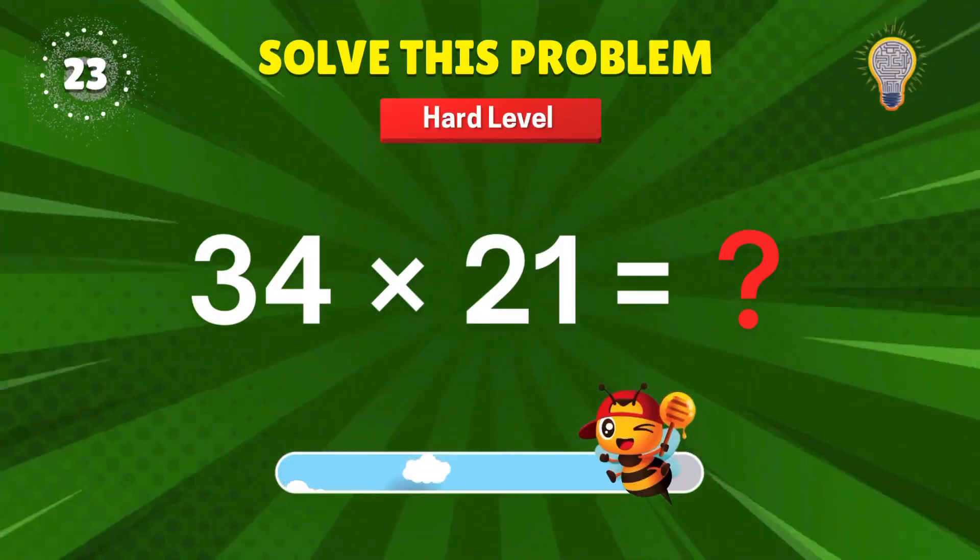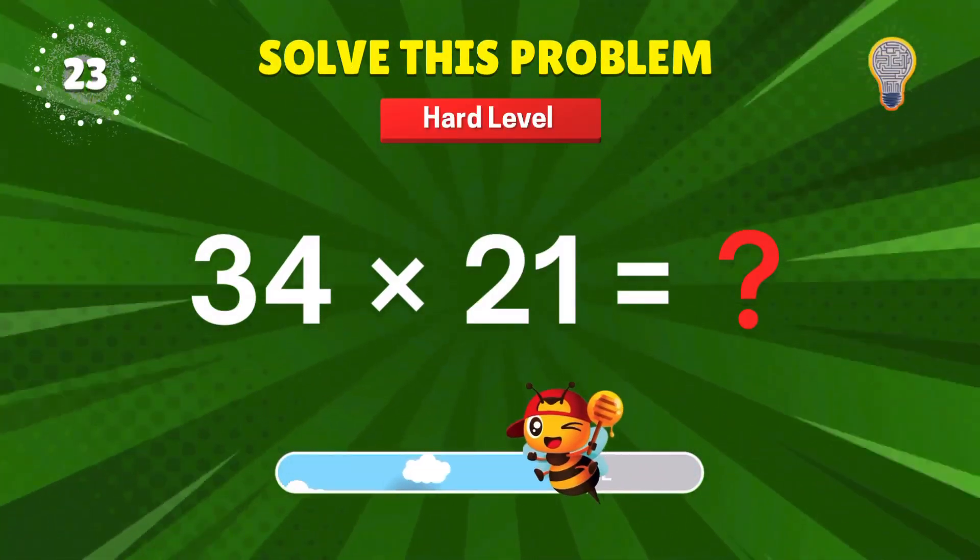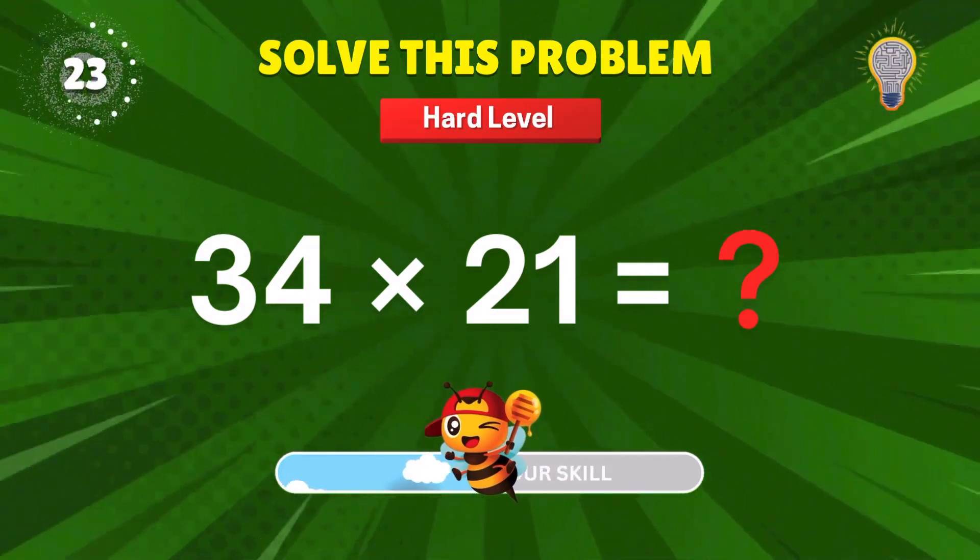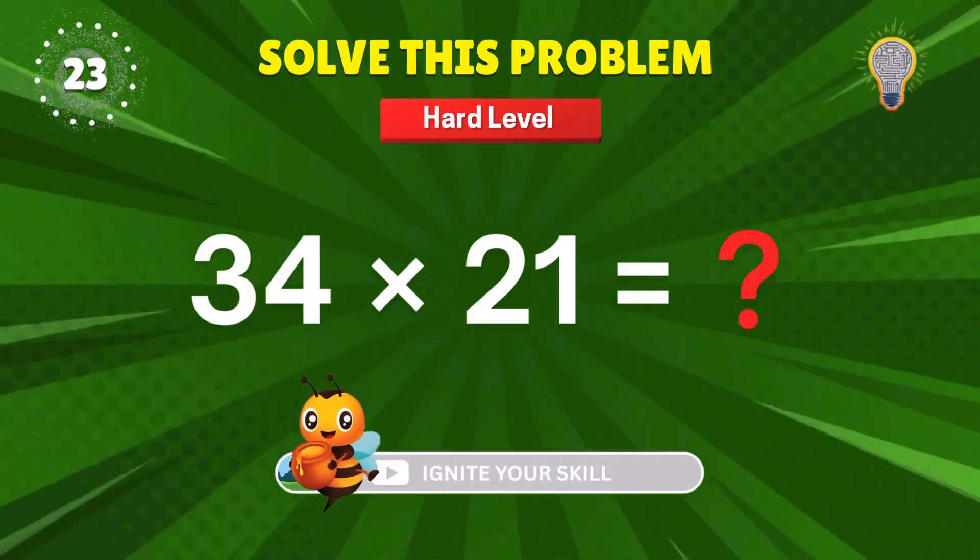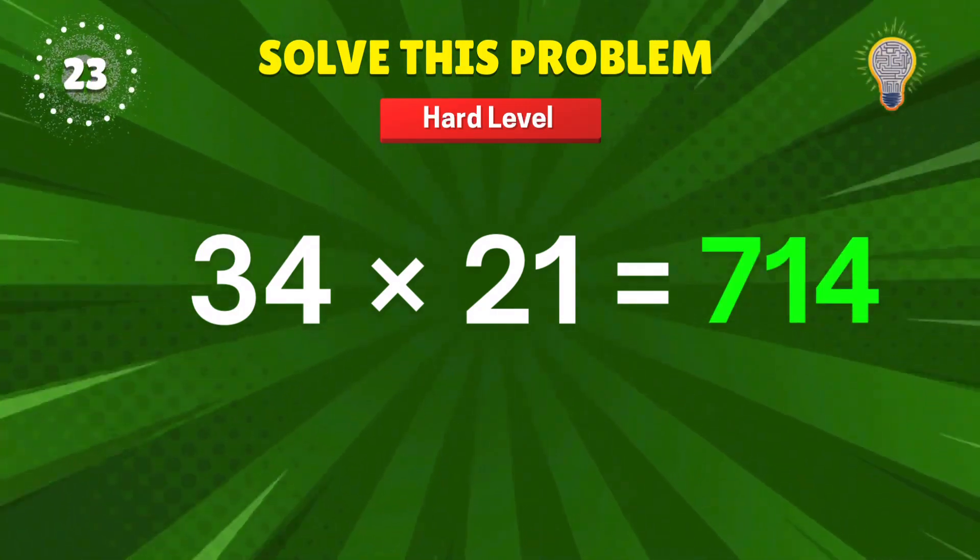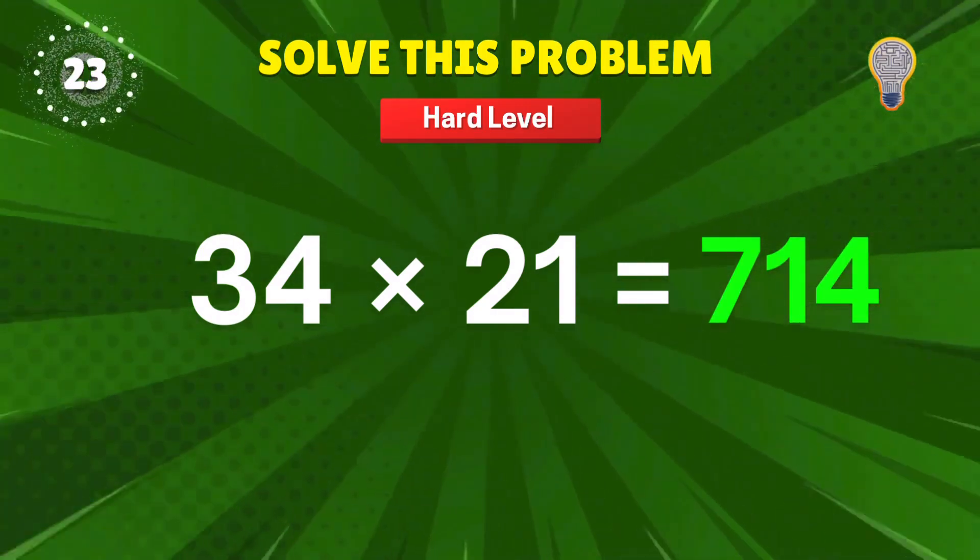34 times 21? Don't panic, just multiply like a pro. 714. That's genius level. Add 1 point.